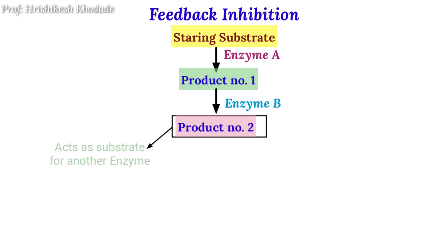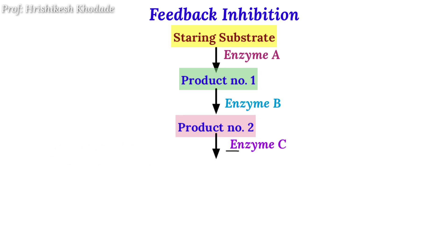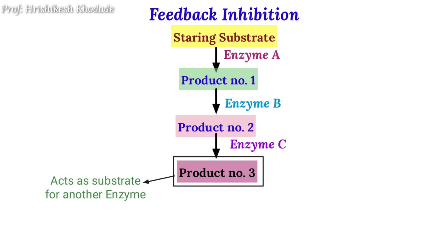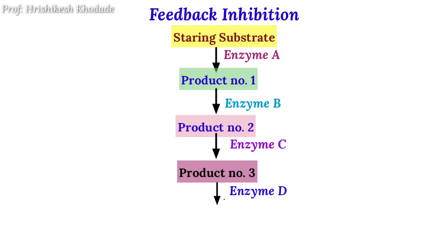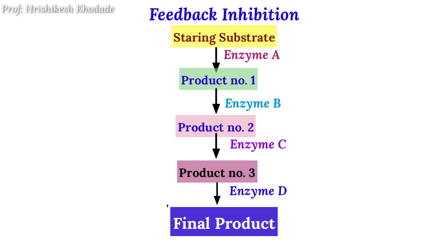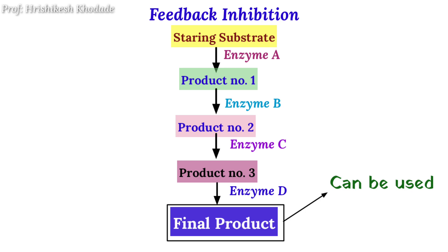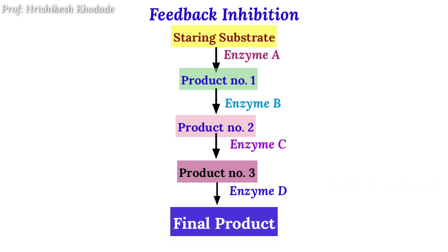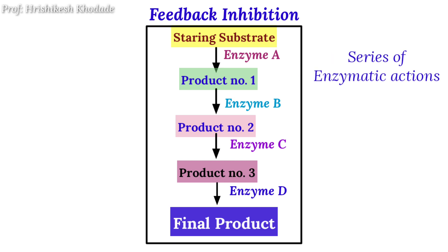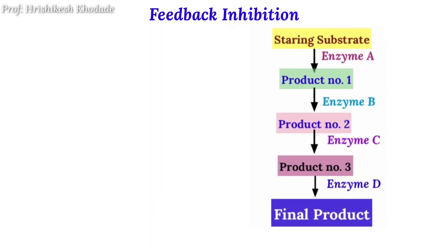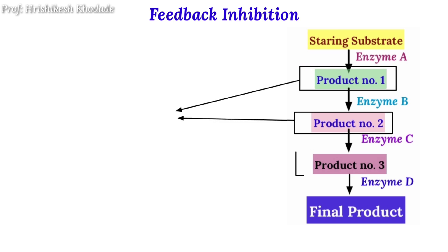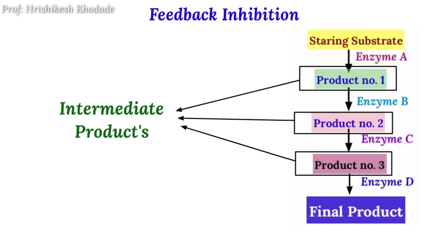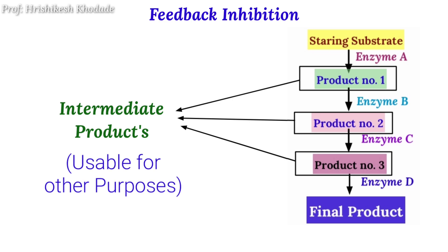Product 2 acts as a substrate for the next enzyme, enzyme C, and by enzyme C's action we get product 3. Again, product 3 acts as a substrate for enzyme D, and by the action of enzyme D we get the final product, which is used by the cell or body for its own purposes. Here you can notice there are series of enzymatic actions, so overall it is known as a pathway of reactions. Product 1, product 2, and product 3 are known as intermediate products, which can also be used for other purposes.